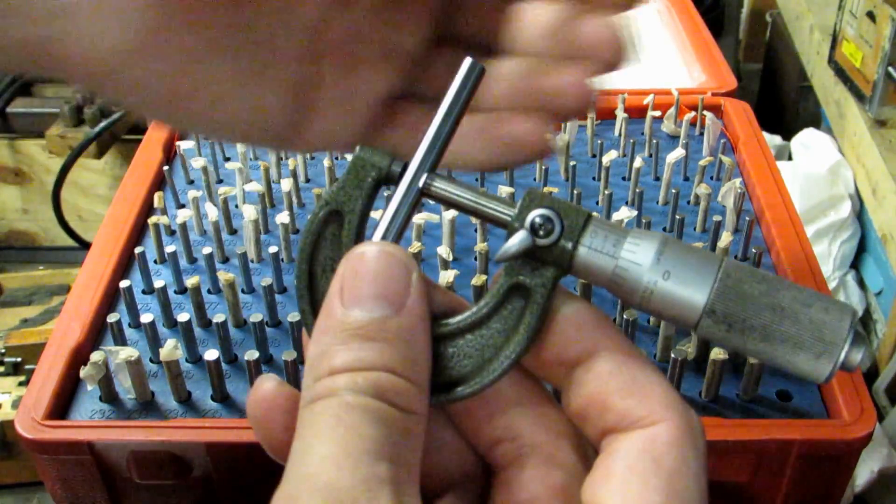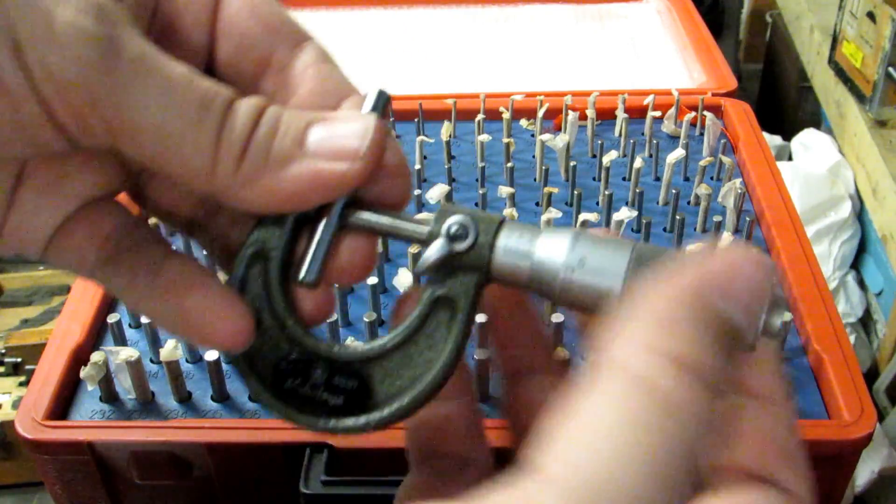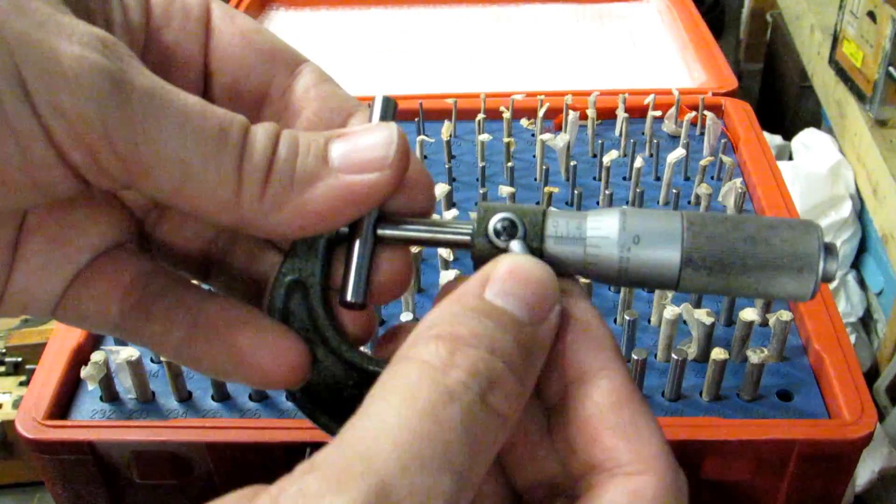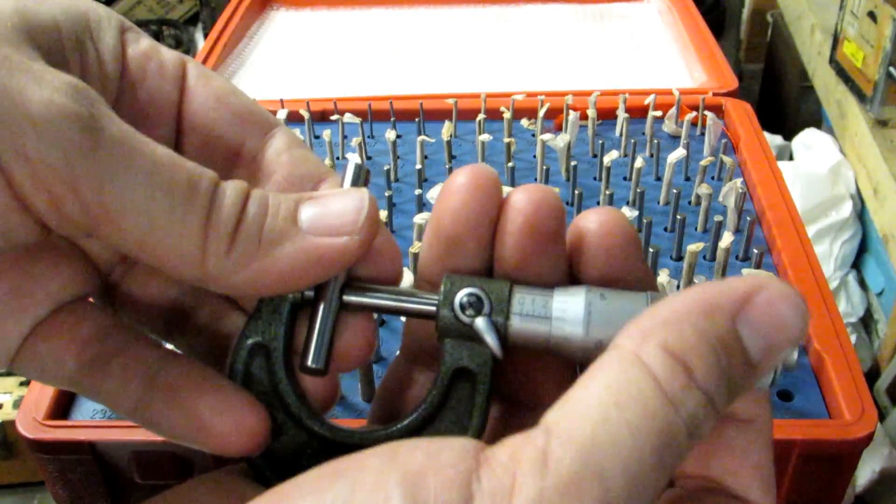There's some wear that could happen over the travel of the micrometer, so it's really good for tight tolerance work to make sure that it reads the correct amount.